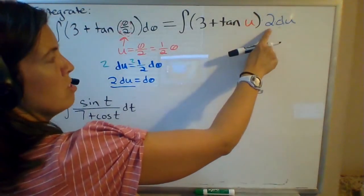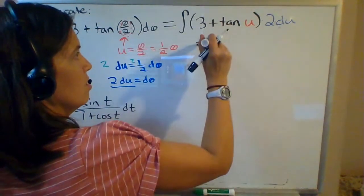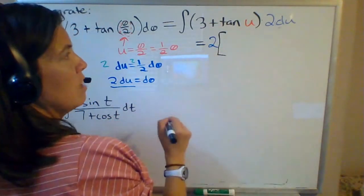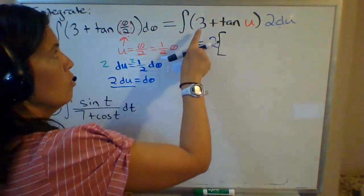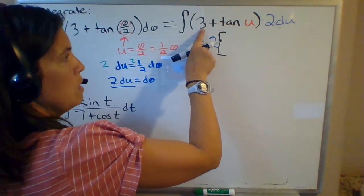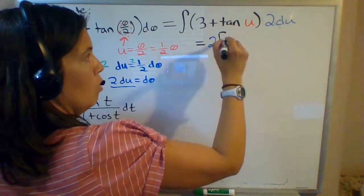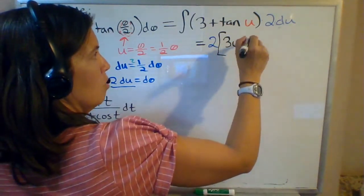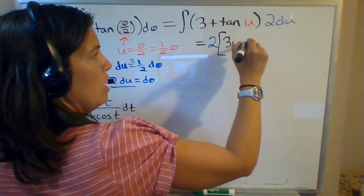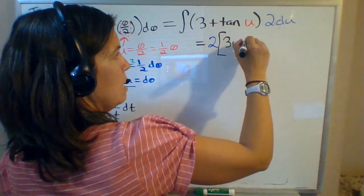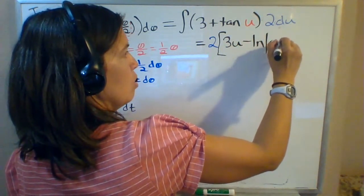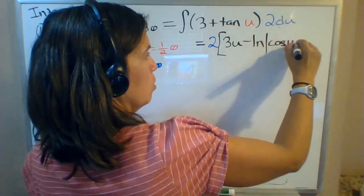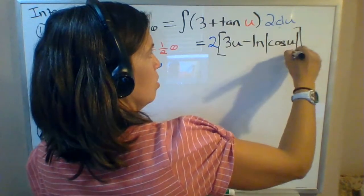Okay, so the 2 is just a constant multiple. We might as well bring that out front. And then we're ready to take some antiderivatives. So the antiderivative of 3 with respect to u will be 3u plus the antiderivative of tangent, which will be negative natural log absolute value of cosine of u plus c.